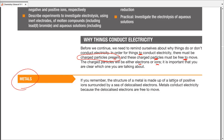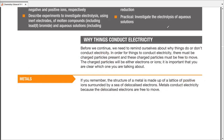Metals are made up of a lattice composed of positive ions, surrounded by a sea of delocalized electrons. Those delocalized electrons are free to move, and that's the sole reason behind the conductivity of metals.